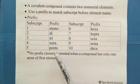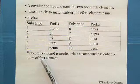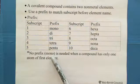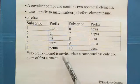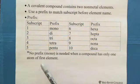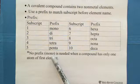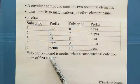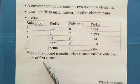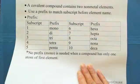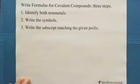Also, same thing: if the prefix is mono, we write 1, but since it's 1, we don't need to write it. Also, the first element — even if it is one, we don't need to put mono. That's why no prefix on the first element means it is one element. So now you are clear on how to write the subscript matching the given prefix.